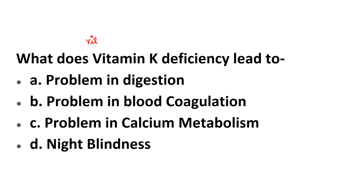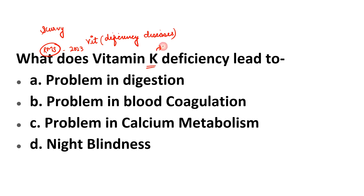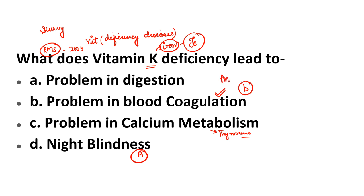What does Vitamin K deficiency lead to? I covered Vitamin C questions in the first and third videos — scurvy appeared in UPSainik and RMS. This December 2023 question is about Vitamin K. Vitamin K deficiency leads to problems with blood coagulation — proper clotting does not occur. Anemia can also result from Vitamin K deficiency. So B is the correct answer — blood coagulation disorder.